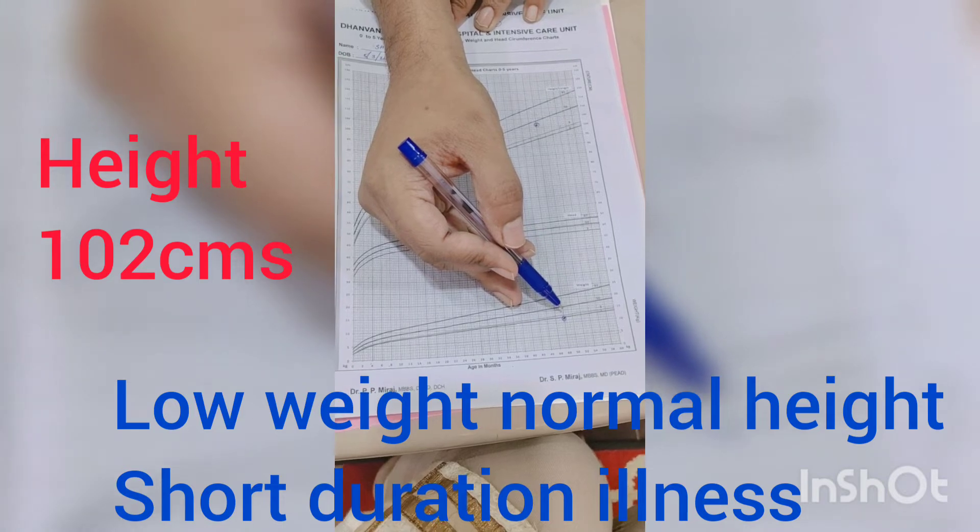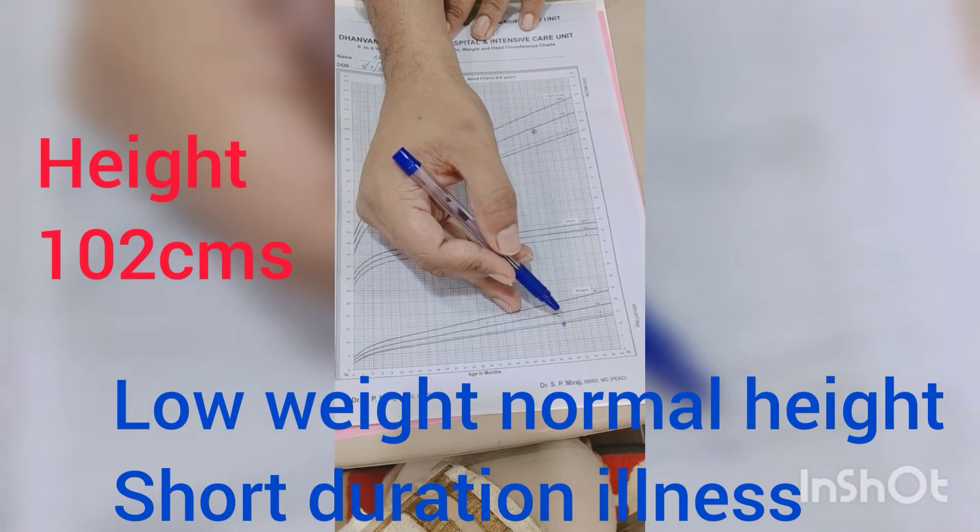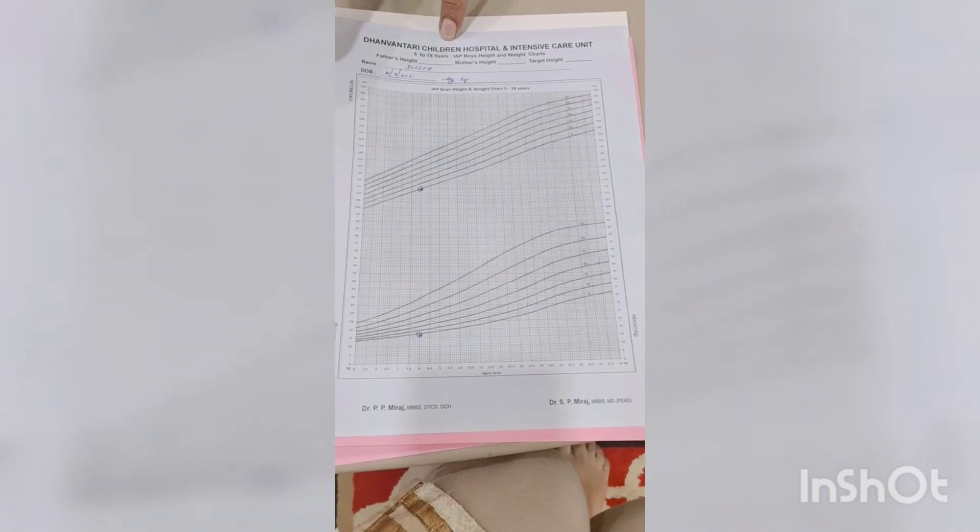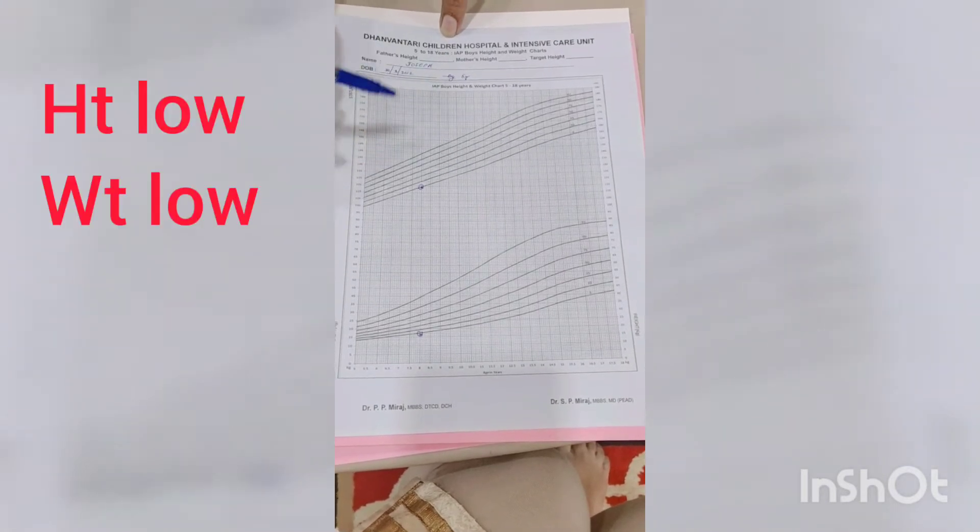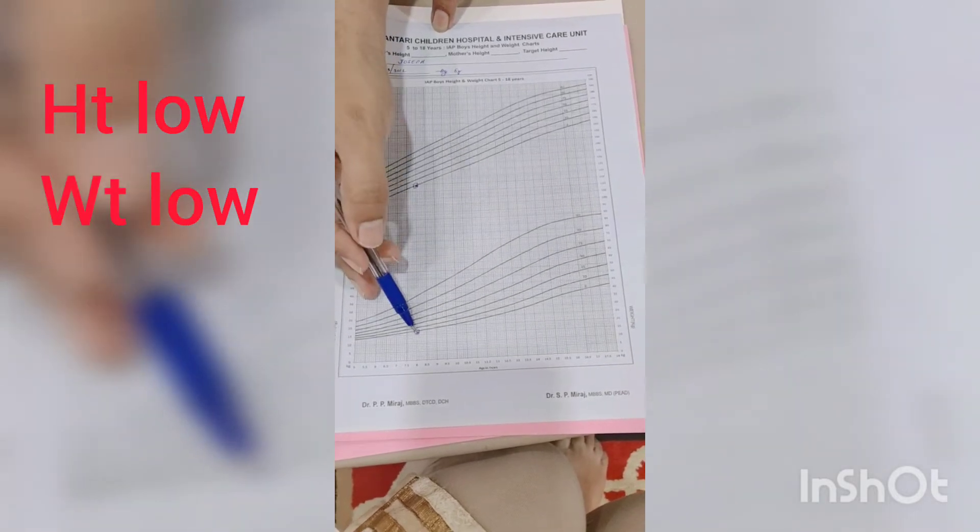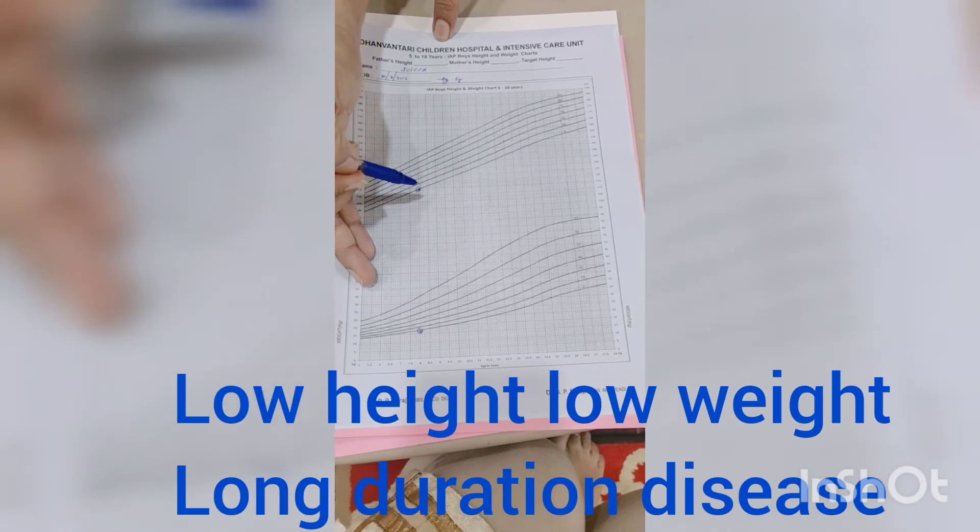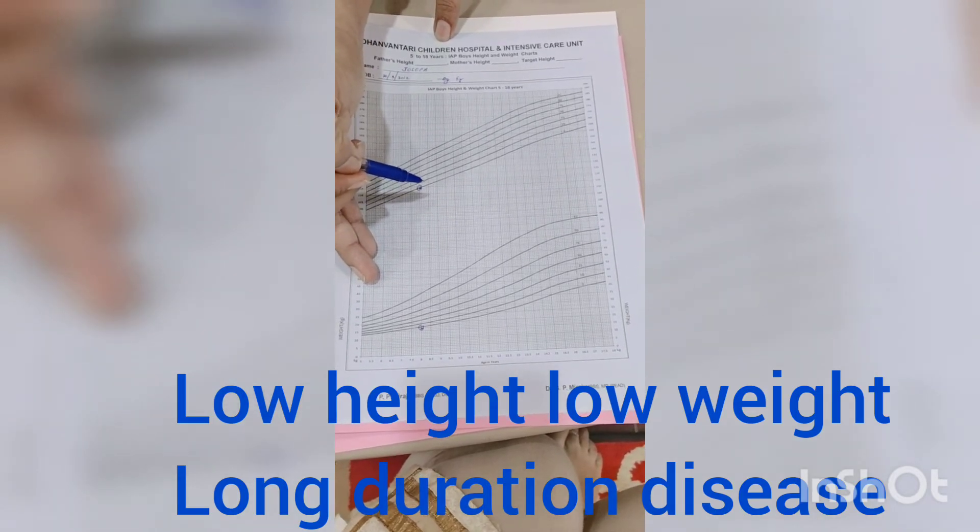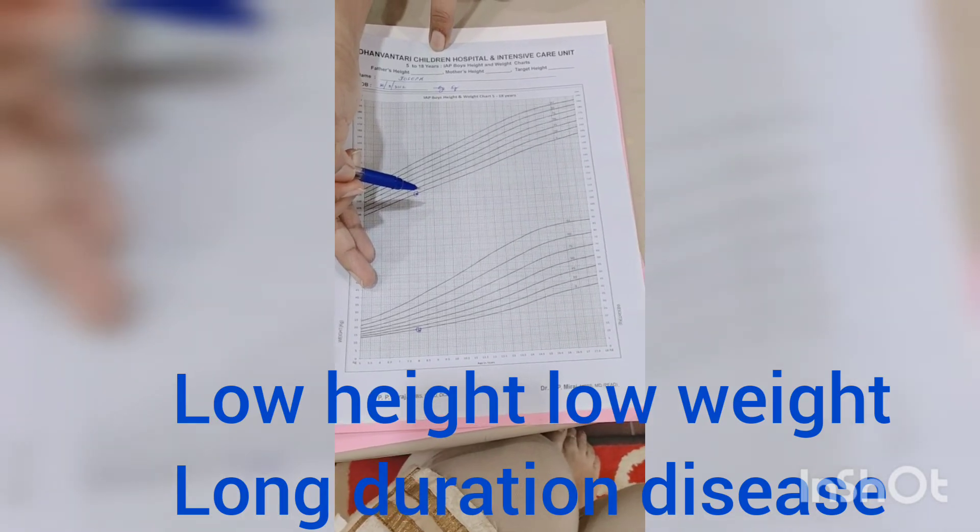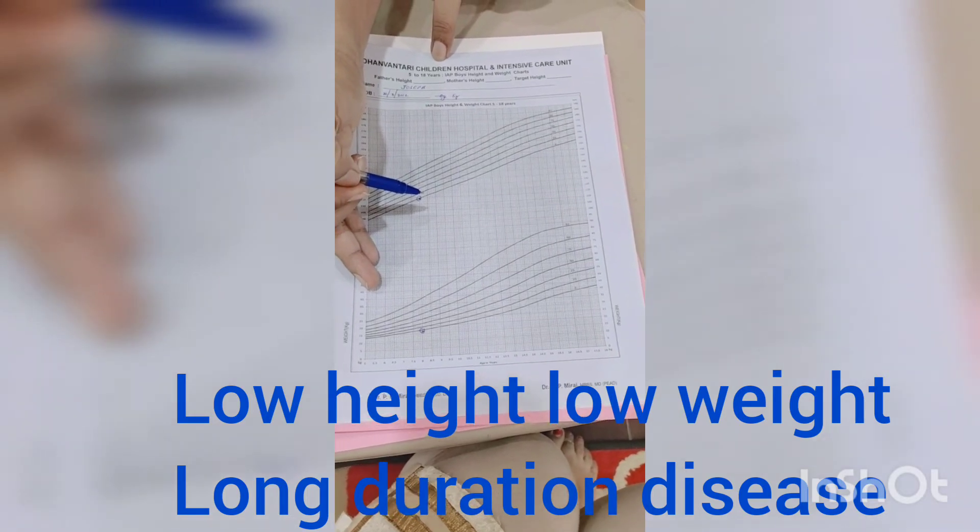What happens is, if someone's height remains okay yet their weight comes down, then something has been abnormal in the last few days. Whereas, eight-year-old Joseph here has both low height and low weight, which means something is wrong with Joseph for a long time. So with these two examples, we understand that if only weight is affected, something is wrong for a short duration, while if height is also affected, something is wrong for a long duration.